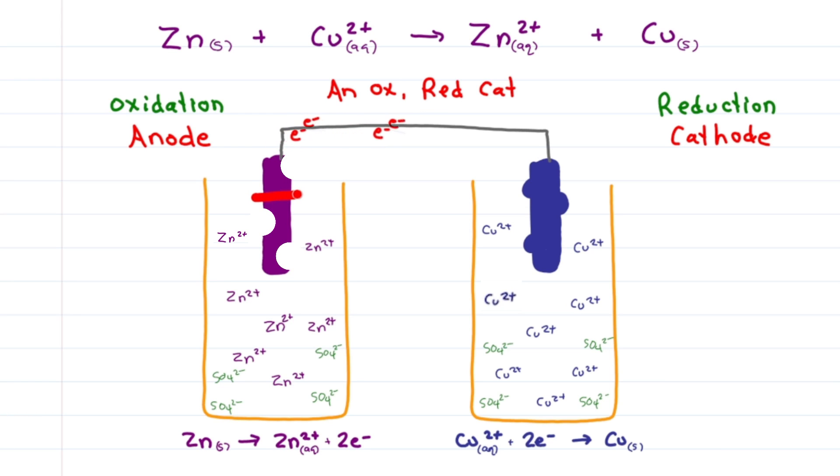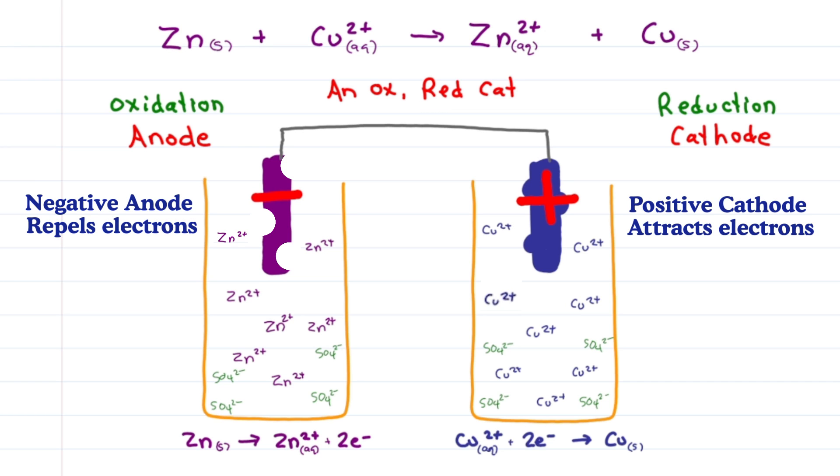As the electrons land on the cathode, they immediately attract copper 2+ cations. This is why we think of the cathode as positive, for all the cations that are attracted to it. Or, think opposites attract, and negative electrons are attracted to a positive electrode.